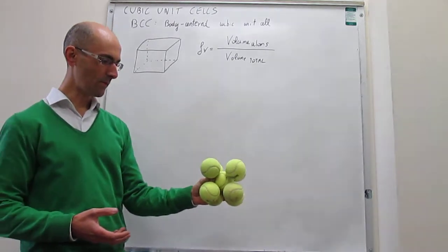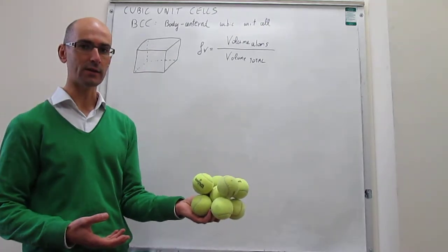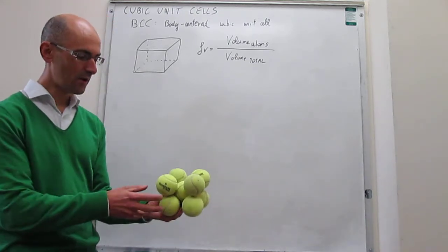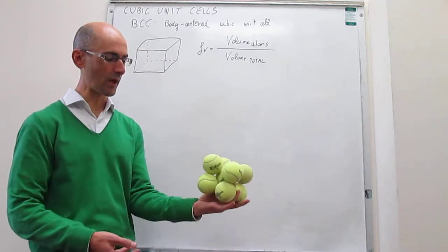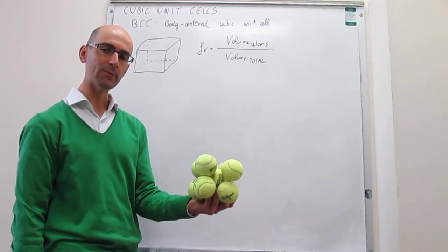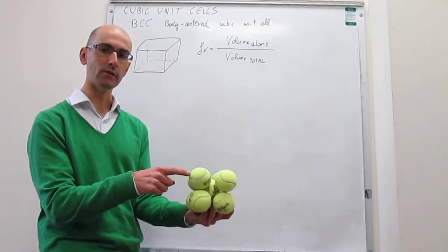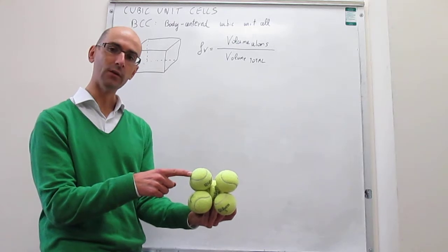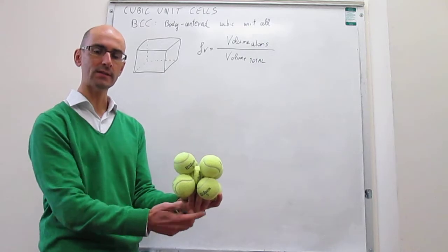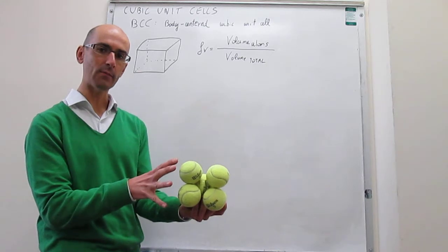To calculate the volume occupied by the atoms in the unit cell, you simply have to calculate how many atoms you have in the unit cell and the volume of each one of those atoms. Each corner of the unit cell is shared by eight neighboring unit cells, meaning only one-eighth of each corner atom belongs to the unit cell proper. With eight corners, each contributing one-eighth, that gives one atom from the corners.